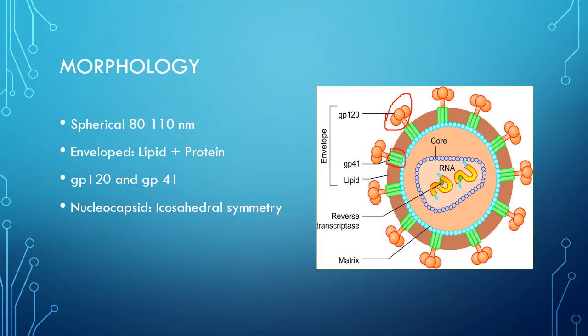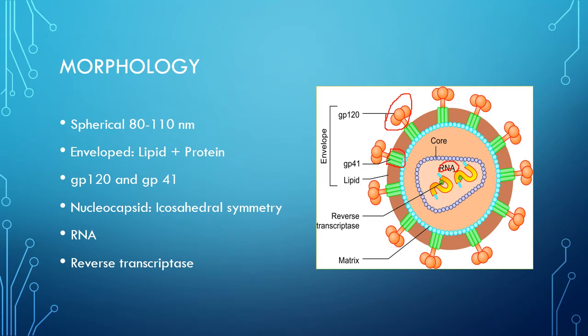The nucleocapsid is icosahedral in symmetry, made up of core protein. Inside there is a dense cylindrical inner core which encloses RNA and reverse transcriptase — a viral enzyme closely associated with HIV RNA.